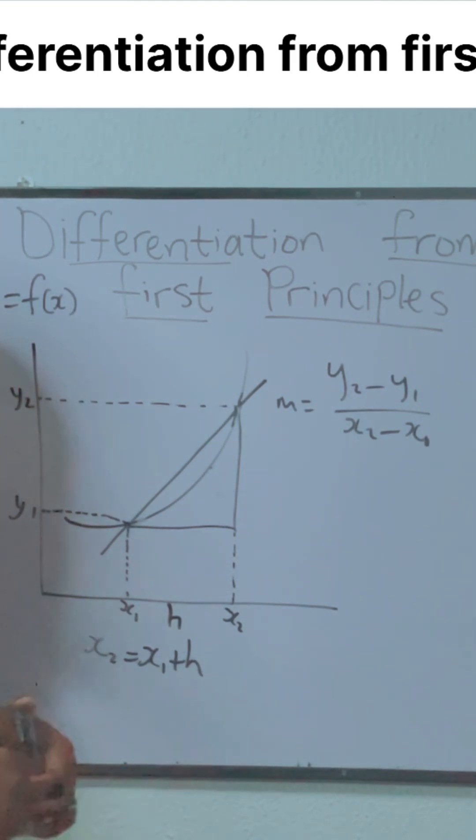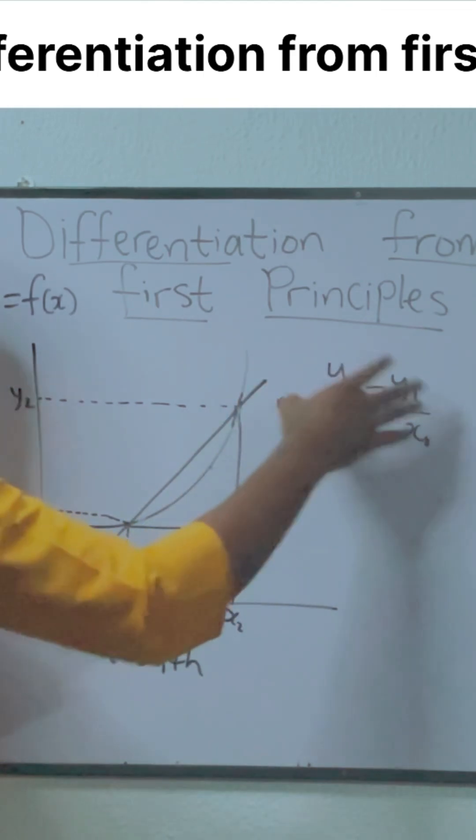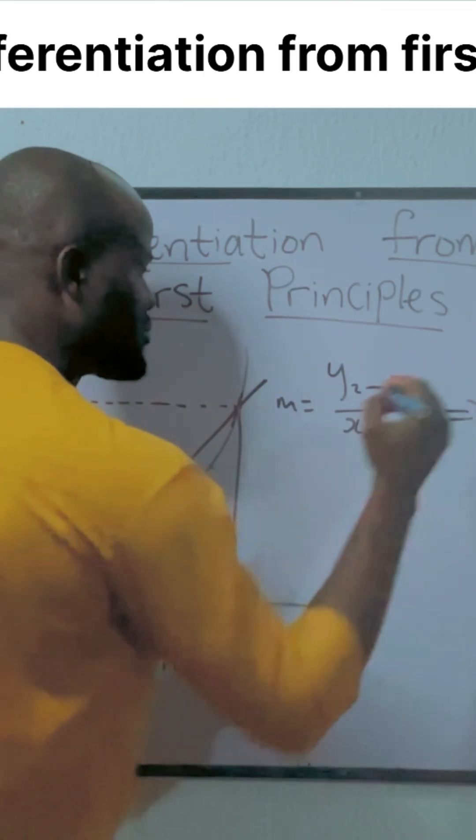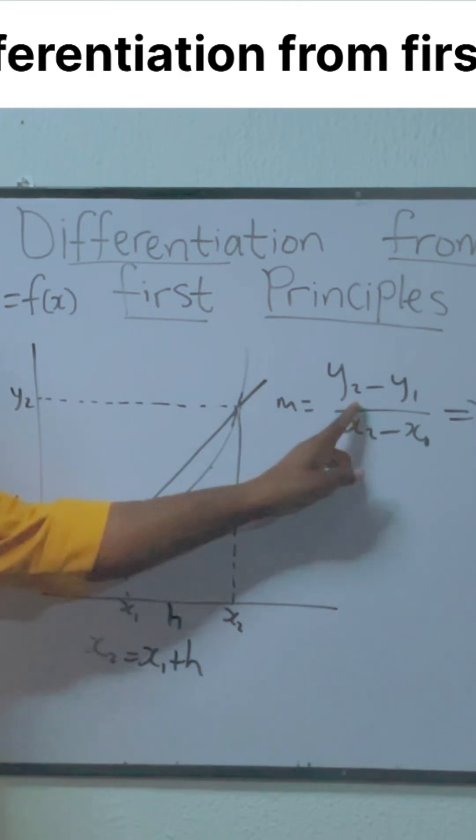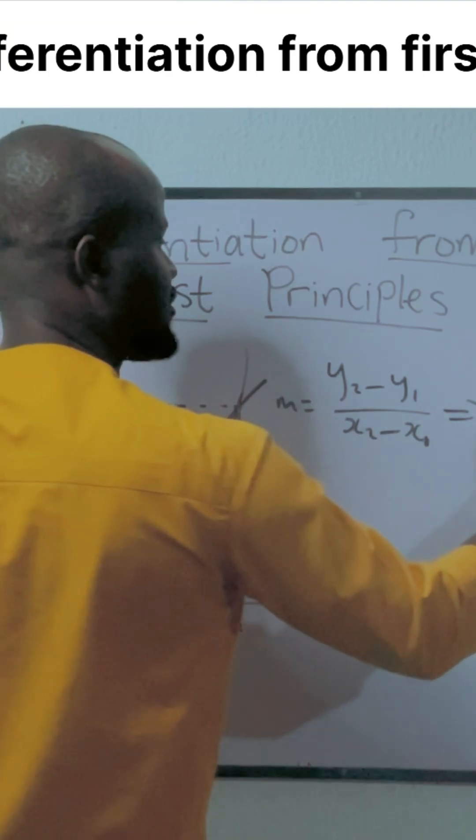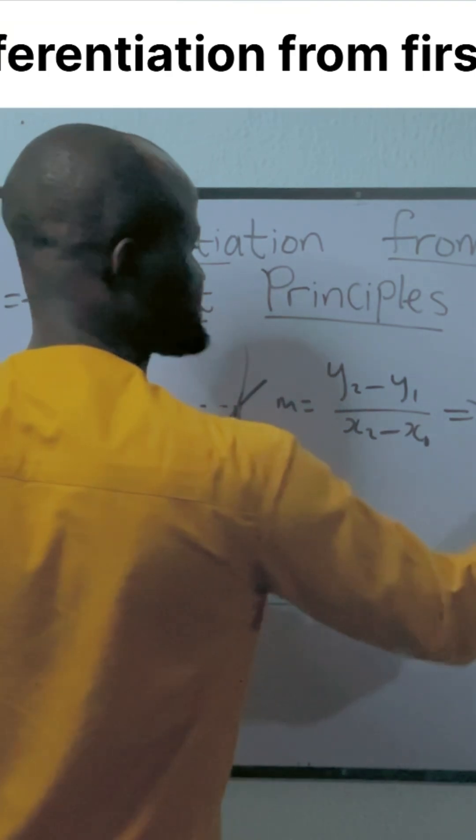I simply want to use these notations because these notations are applicable to the formula for finding differentiation from first principles. So I'm going to rewrite what I have here. I can choose to rewrite this formula as—and what is the value of my y2? What other notation does my y2 represent? It represents f of x plus h.